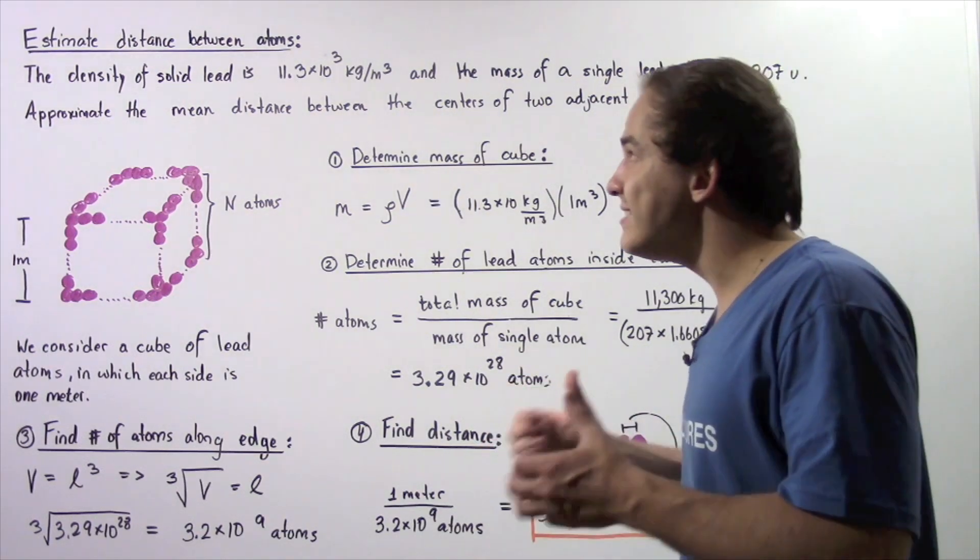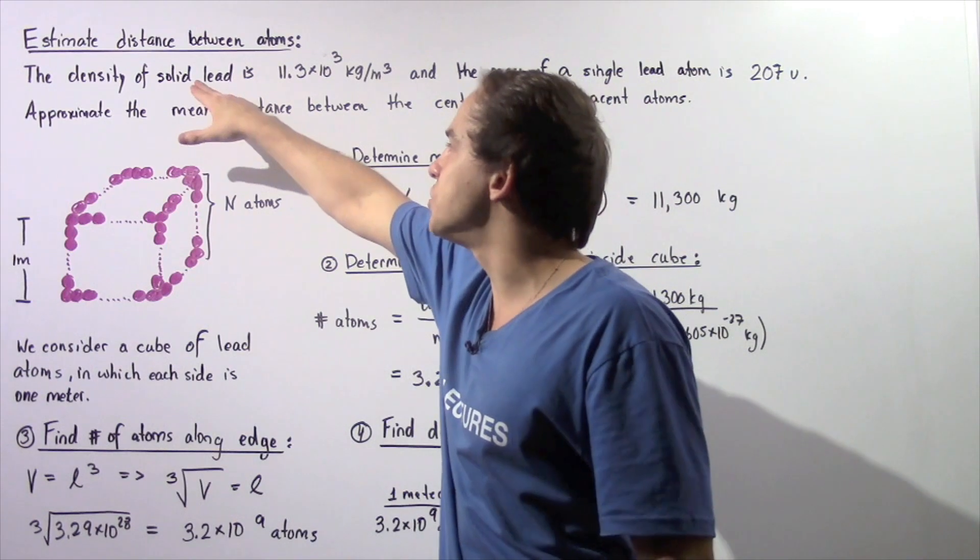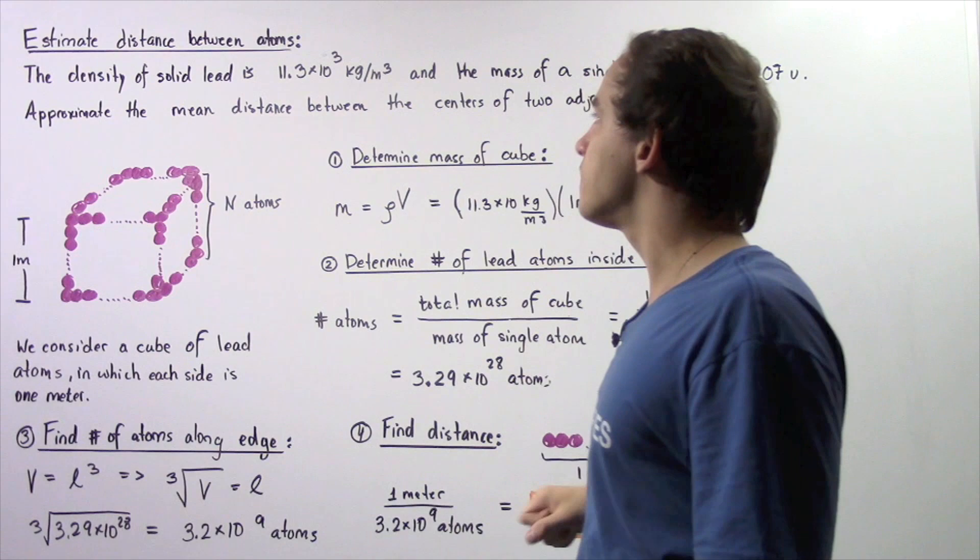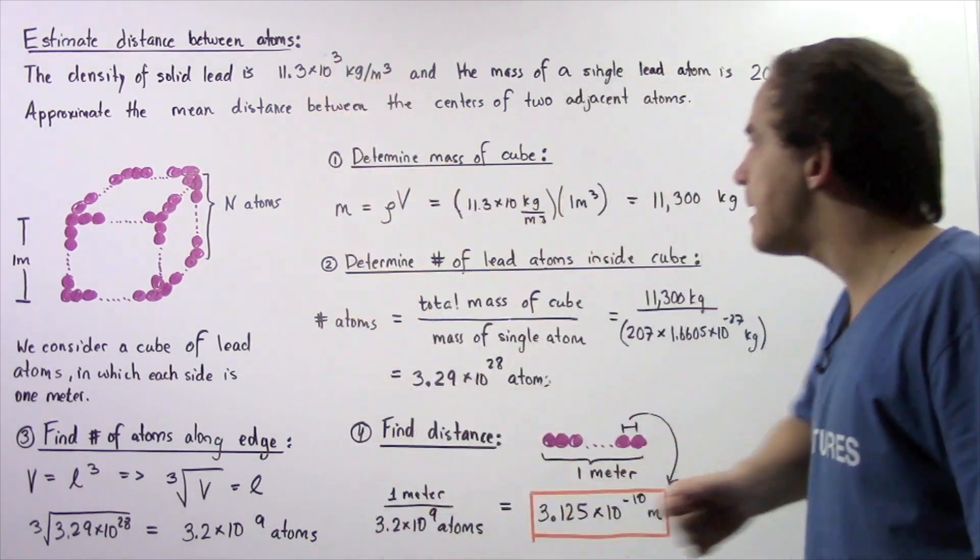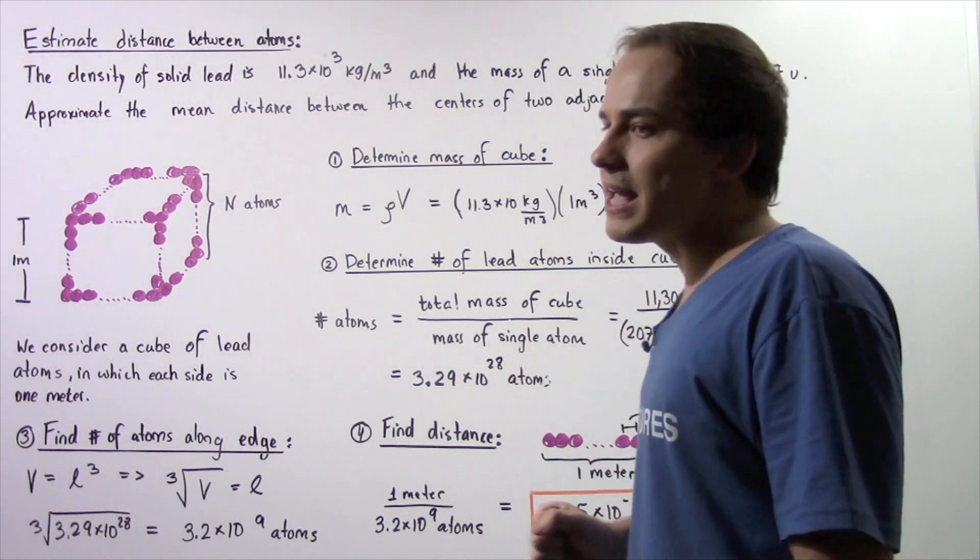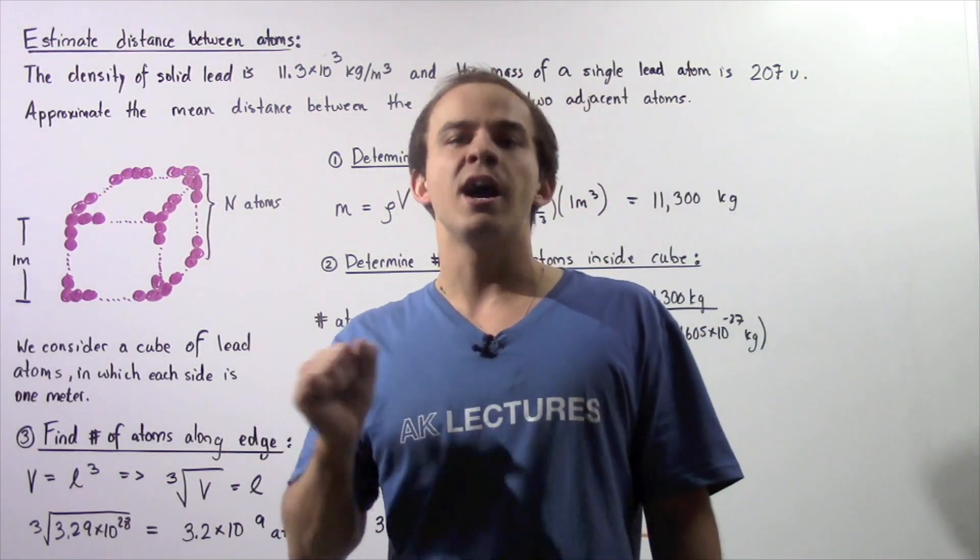In fact, we can use any solid. For example, if this was copper instead of lead, we simply take the density of copper and we follow these same four steps to calculate the distance between the centers of any two adjacent copper atoms.